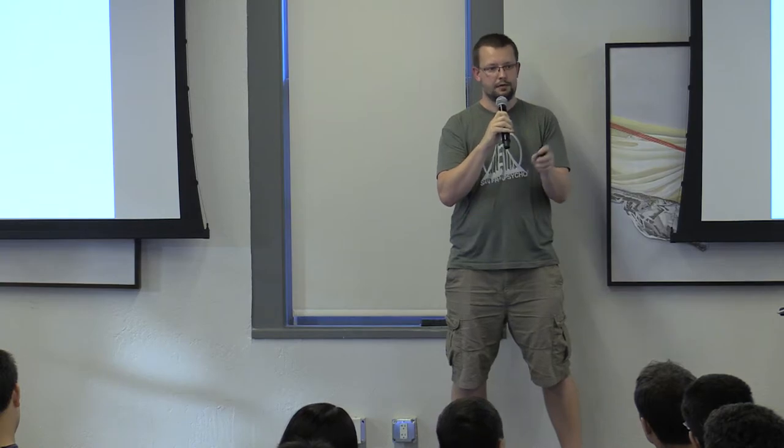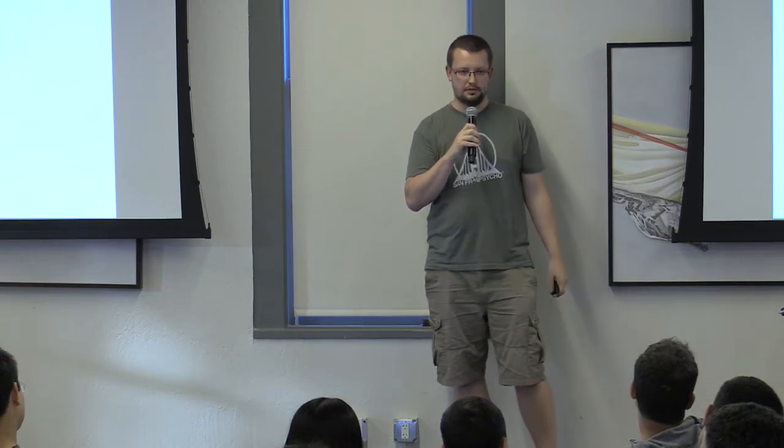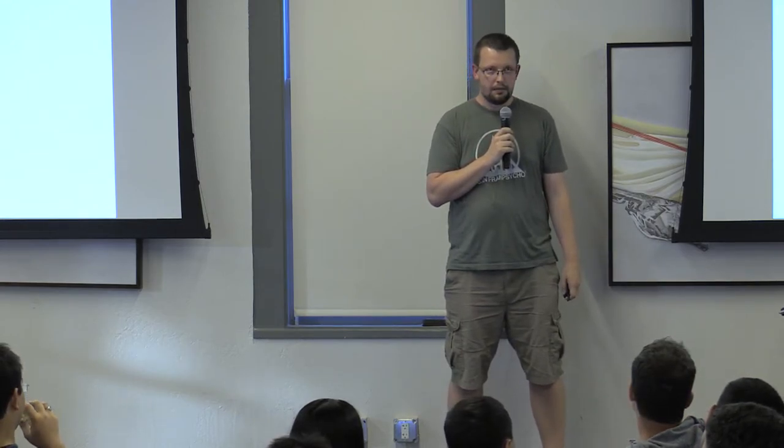A question was raised about distribution differences between databases. The speaker responded that different databases had different users, different numbers of users, and were from different time periods. The paper just assumed each user database has a different distribution — different kinds of people thinking about different passwords. The top thousand is pretty similar across databases, but the rest of the passwords are essentially random.